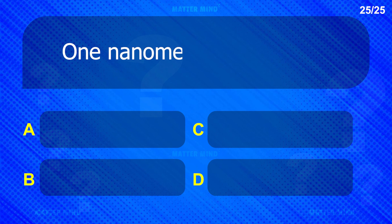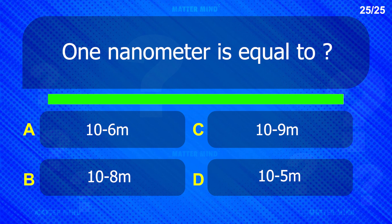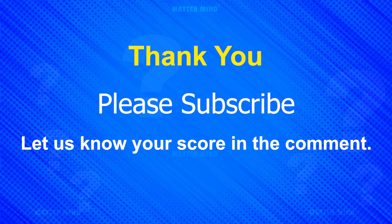1 nanometer is equal to — 10 power minus 9 meters.